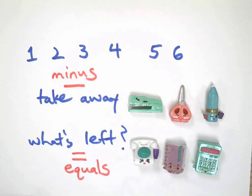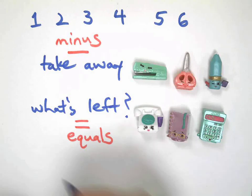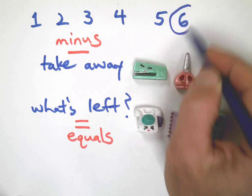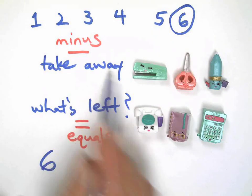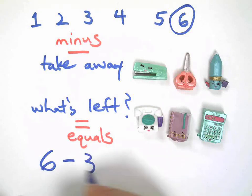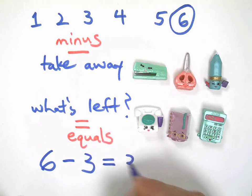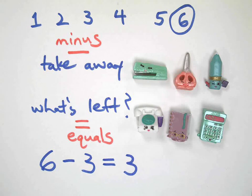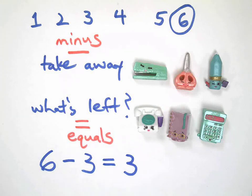And 'what's left' is another way of saying the equal sign. So here's our last problem of the day: we started with six, then we took away — minus — three, and then what's left — the equal sign — there were still three left. Thanks for watching the first Shopkins video for math! Stay tuned for more exciting Shopkins math videos coming soon on the Witcher Math Channel. See you later, guys!